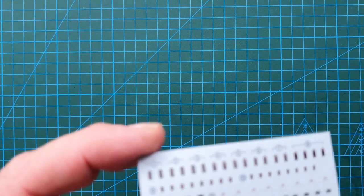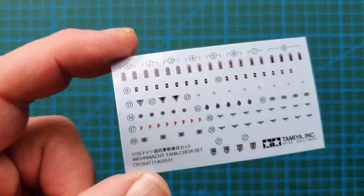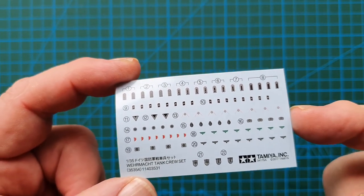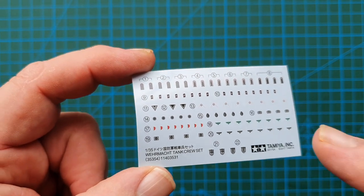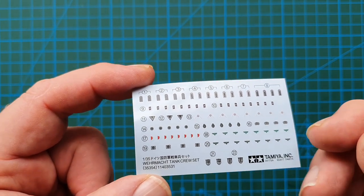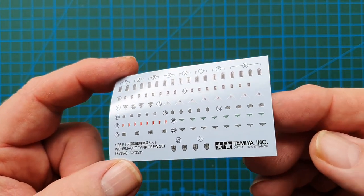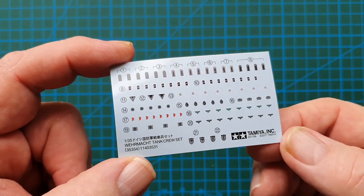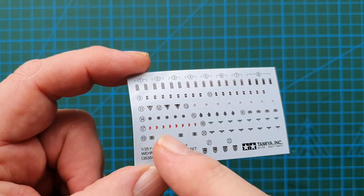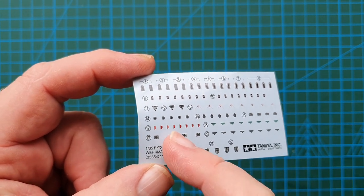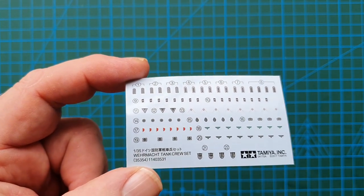Okay, so first off let's have a look at the decal sheet. As you can see: shoulder boards, collar tabs, even the pink badges for the caps. Your breast eagles in different colors depending on what year you're going to model these on.